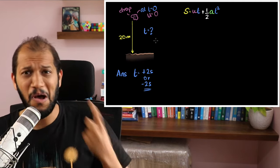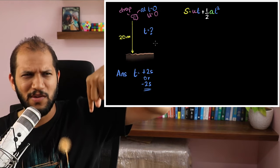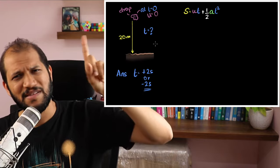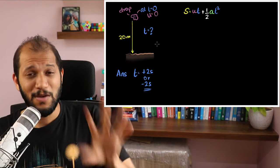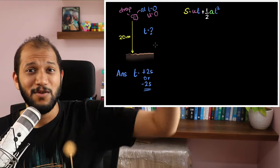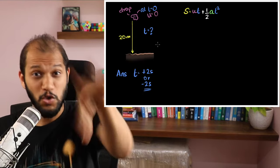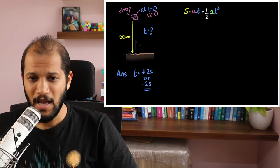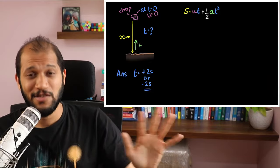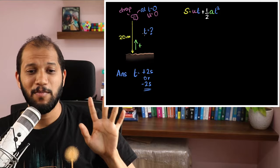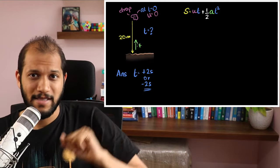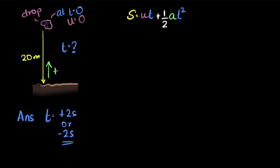The sign of G used to confuse me. I used to think: if the stone is going down, use positive G; if going up, use negative G. But that's not how you do it. The positive and negative sign has nothing to do with whether the stone is going down or up — it has to do with what you choose as positive direction. If Mridul chooses upwards as positive, then gravity, which is downwards, becomes negative: G equals minus 10 m/s². You could choose downwards as positive, and then G would be plus 10 m/s². It's completely your choice.